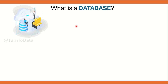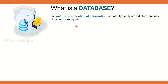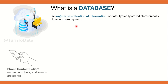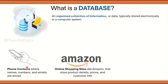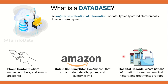What is a database? A database is nothing but an organized collection of information or data, and this is typically stored electronically in a computer system. Let me give you some examples. Phone contacts, where you store names, numbers and emails, are an example of a database. Then you have online shopping sites like Amazon, Flipkart, Walmart, etc. — these are also an example of a database because they store product details, prices and customer information. Then you have hospital records where information like medical history and treatments of patients are also kept.